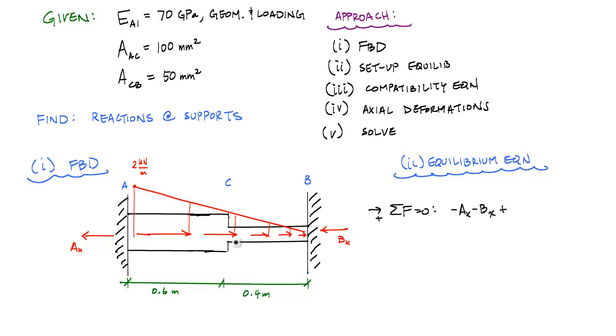So one-half the base times the height, and the height in this case I'm going to call this 2 kilonewtons per meter, and the base is 1 meter, is equal to 0. And this will just tell me that Ax plus Bx is equal to 1 kilonewton. And this is my equilibrium equation.